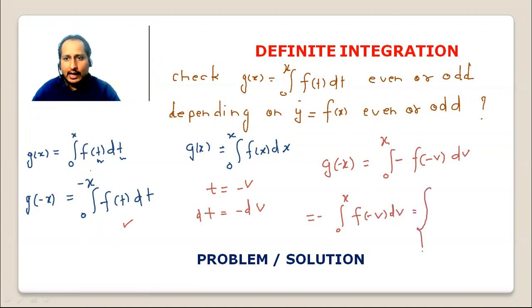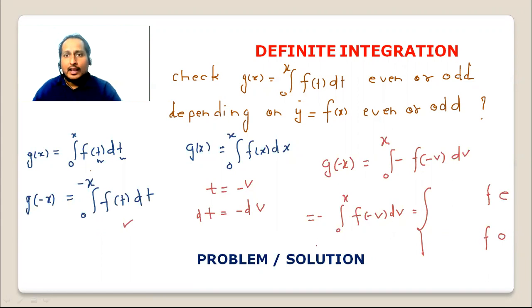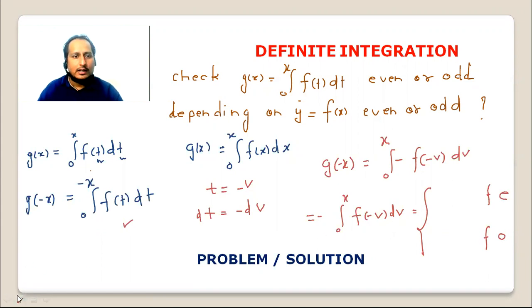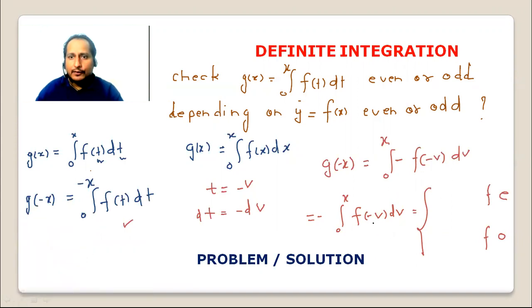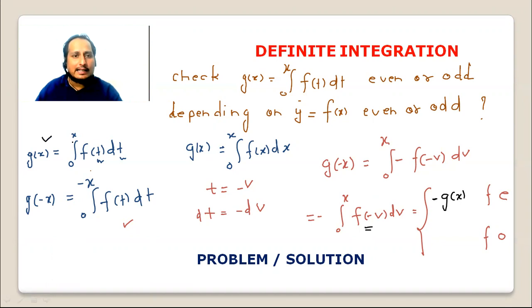Now there are two possibilities depending on whether f is even or odd. If f is even, then f(-v) = f(v), so the expression becomes minus the integral from 0 to x of f(v) dv, which equals minus g(x). So g(-x) = -g(x), meaning g is odd when f is even.